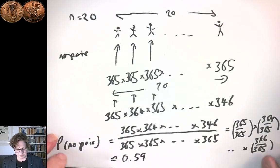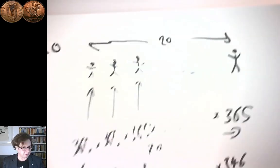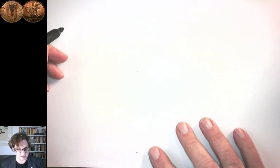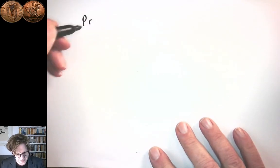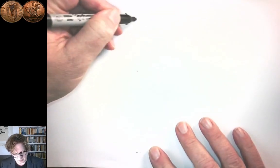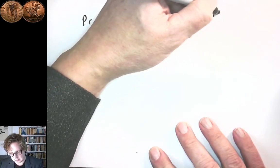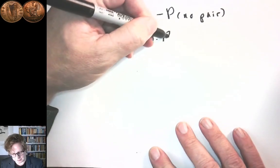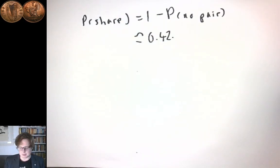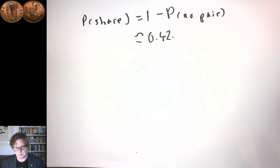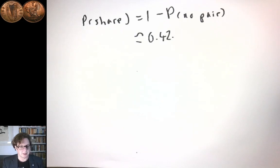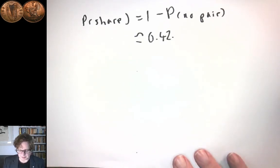When you do that, what you get is approximately 0.59. And so that wasn't quite the thing we were interested in — we were interested in the probability that people share a birthday. So P(share) = 1 − P(no pair), and that's about 0.41 or 0.42. So if you have a group of 20 people, the probability that at least two of them will have the same birthday is about 42%. My intuition would have been that the probability would have been much lower.